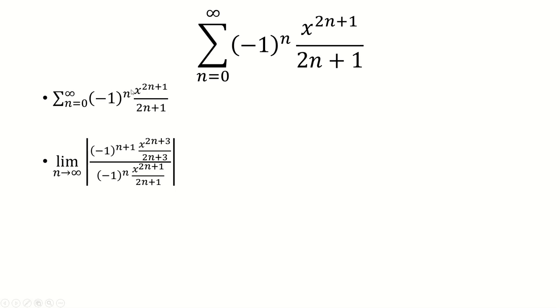The nth term is just the original one, which goes on the bottom, and then we're going to replace n with n plus 1. So n replaces n plus 1. 2n plus 1 will just be 2n plus 3. And notice that the negative 1 to the n plus 1 over negative 1 to the n is just negative 1.